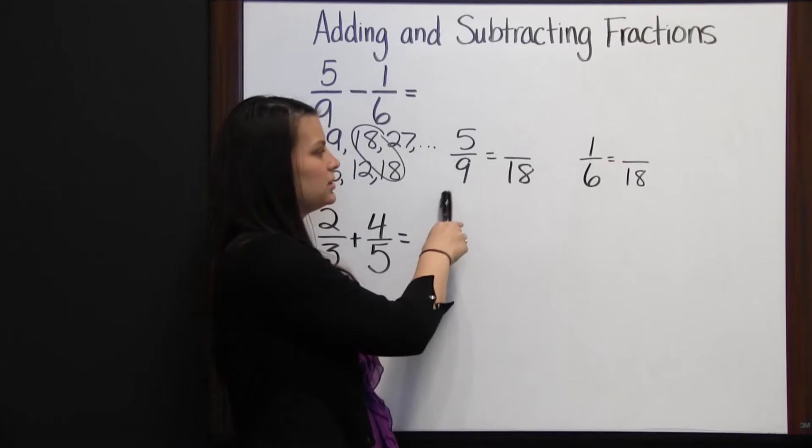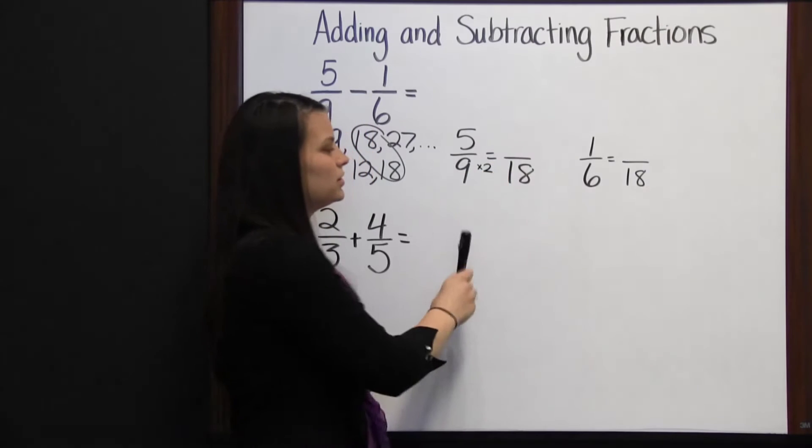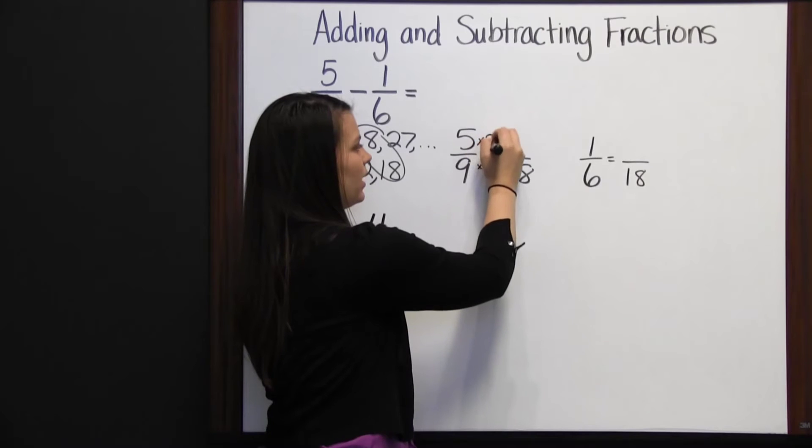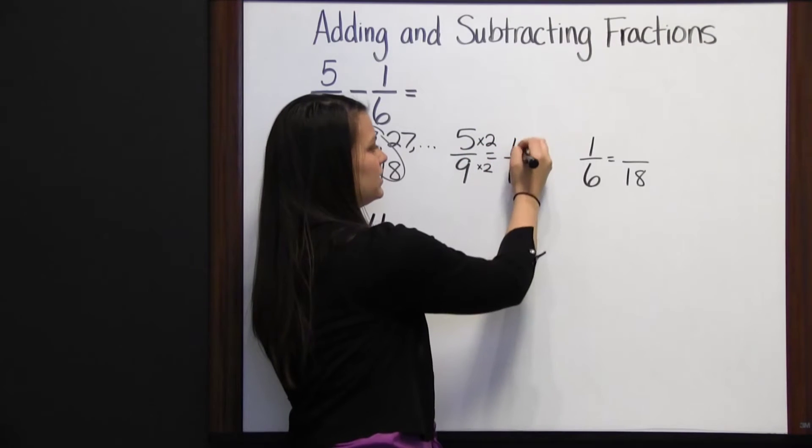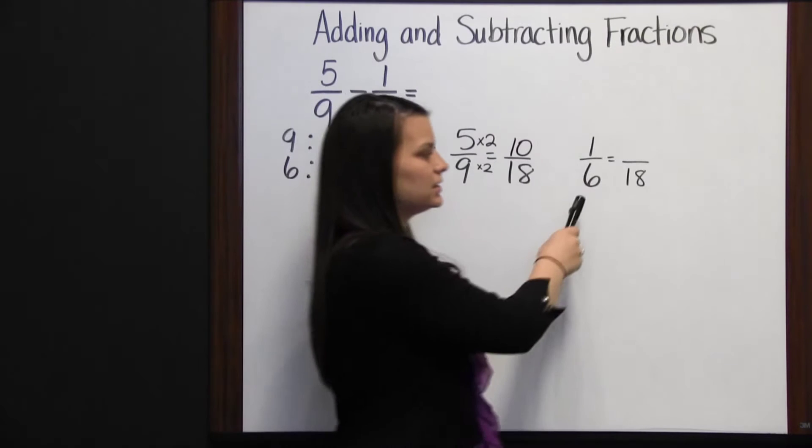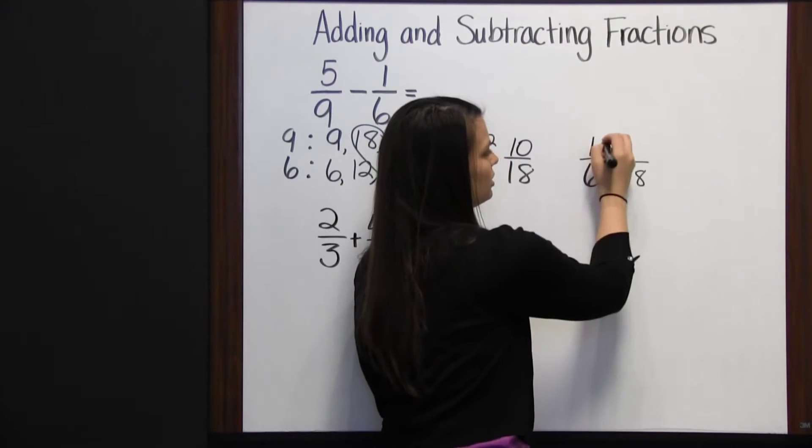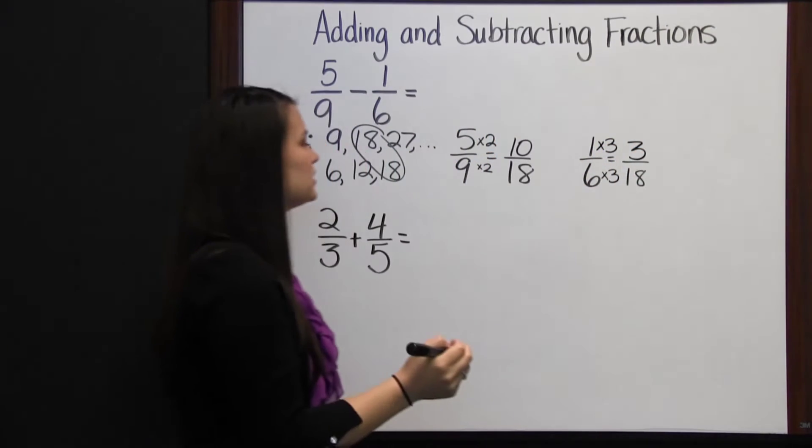Nine times two is eighteen, so since we multiplied our denominator times two, we must also multiply our numerator times two. Five times two is ten. Six times three is eighteen, so we must also multiply our numerator times three, and we get three-eighteenths.